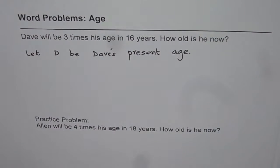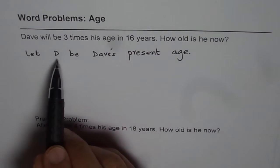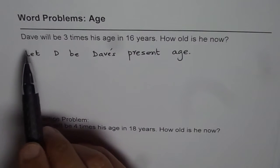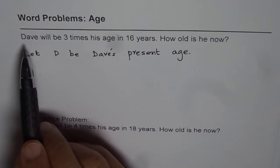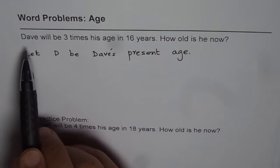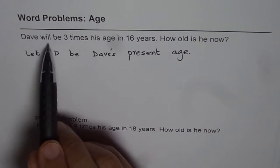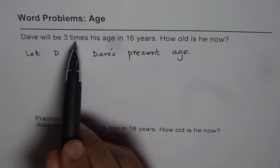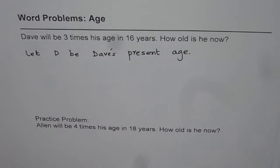So we know the present age is D. We will try to figure out what this value for D is. Now the question is the first statement: Dave will be 3 times his age in 16 years.